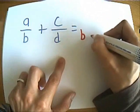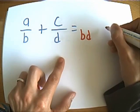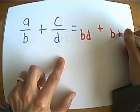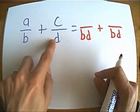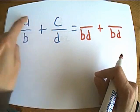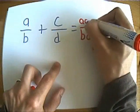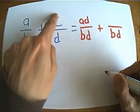So in this case, our new common denominator is B times D, or BD. And then you're going to cross-multiply. Because we've multiplied B by D, we're going to multiply A by D.